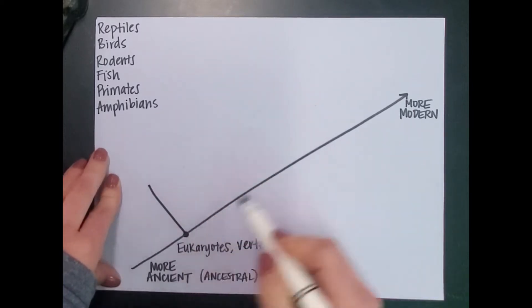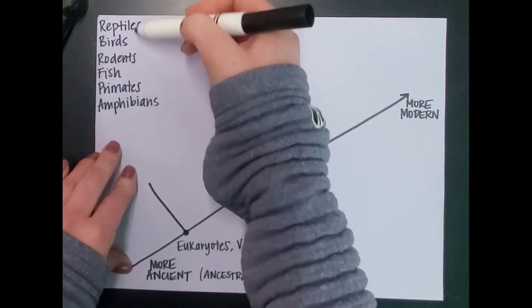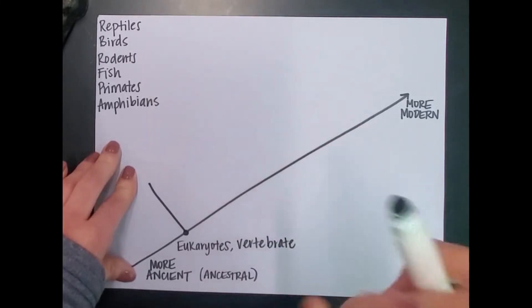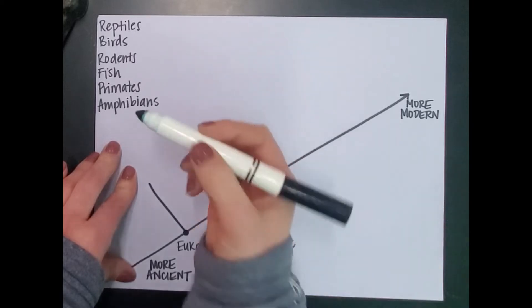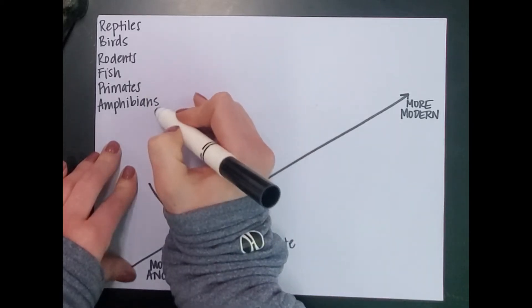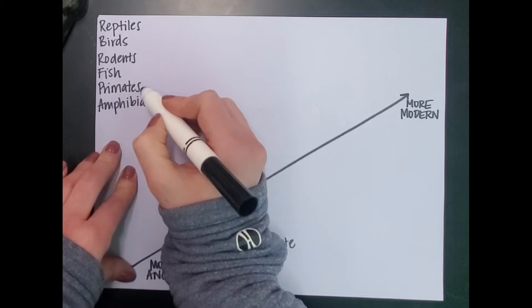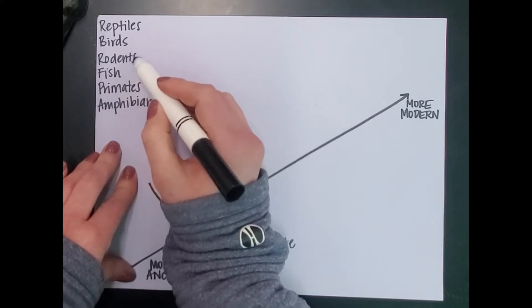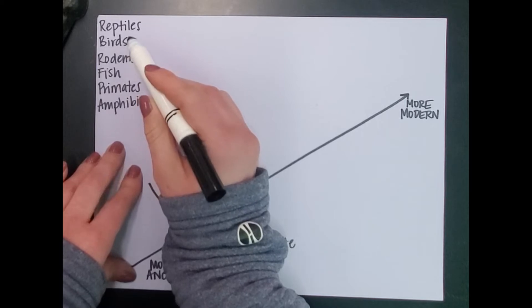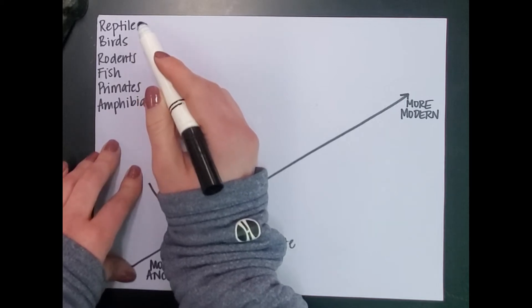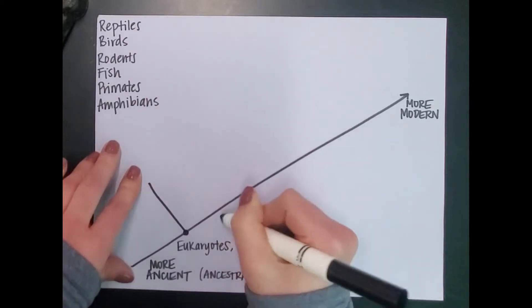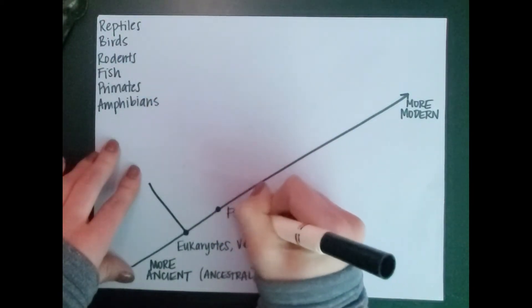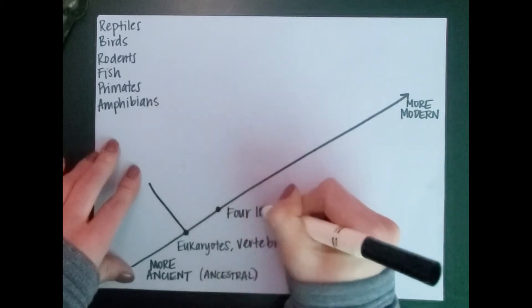So the next thing I need to do is figure out which is least like the others. If I think about how many arms and legs these have: amphibians, like a frog, has four legs or arms. Primates have four. Fish have a flipper or fin. Rodents have four arms or legs. Birds have wings and legs. Reptiles have usually four arms or legs. So I'm going to put four limbs here.